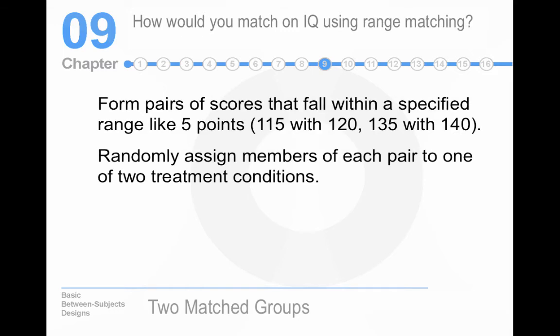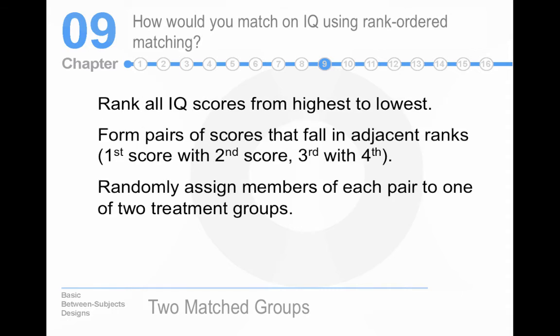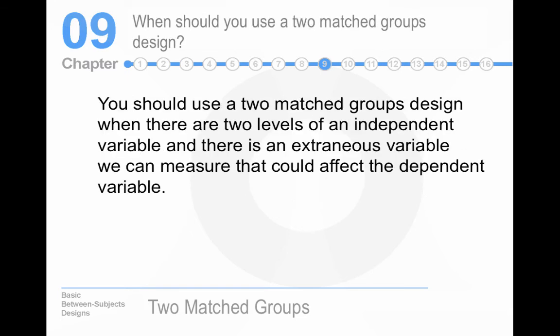You could also use what's called range matching. This is far more common. What you do is you set a range. So let's say between 115 and 120. These are really high IQ scores, by the way. Average IQ is 100. So you could use between 100 and 105, let's say, and match people based on that. So if you're in that range, you're matched. You could also do a rank ordered matching, where you essentially put people in ordinal ranks and then match them based on that. The problem with it is that there could be huge differences between members of a pair. I've never actually seen rank order matching used in the real world, but you know.